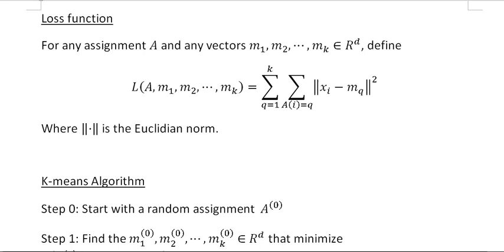Now let's define the loss function for any assignment a and any vectors m1 through mk. The inner summation is taken over all i's such that a(i) equals q — essentially the sum of terms where the xi's are in the q-th cluster. We can think of these m's as the centers of the k clusters, though at this point they can be any vectors in the Euclidean space. This summation is the sum of the squared distance of each point to its cluster center.